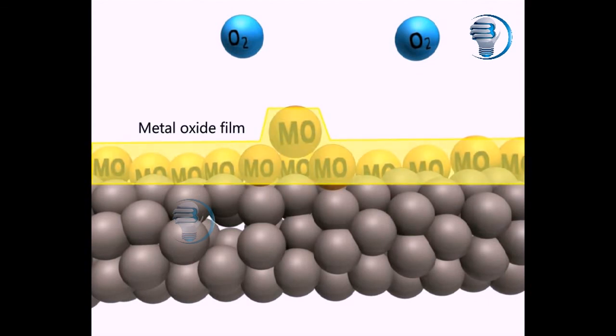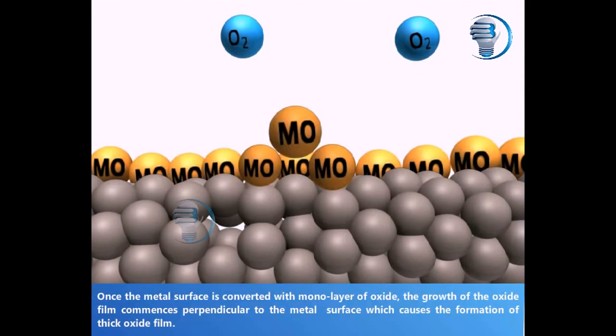Once the metal surface is covered with a monolayer of oxide, the growth of the oxide film commences perpendicular to the metal surface, causing the formation of thick oxide film.